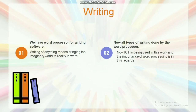What is writing? Writing is a medium of expression. We have to write for different needs. It might be a piece of literature like poem, short story, novel, diary, etc. So we have word processor for writing software. Writing of anything means bringing the imaginary world to reality in words.